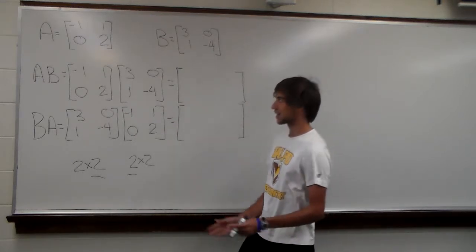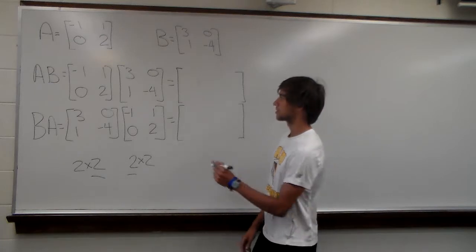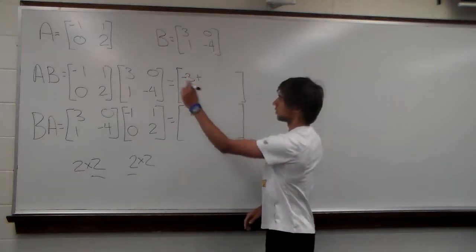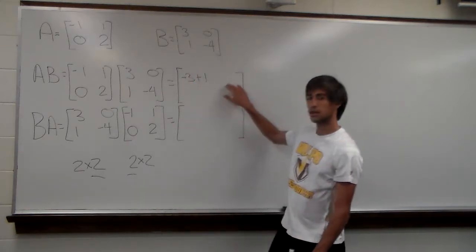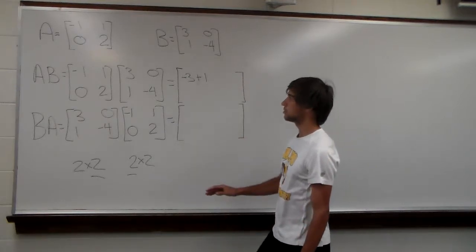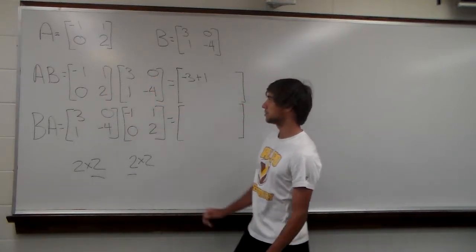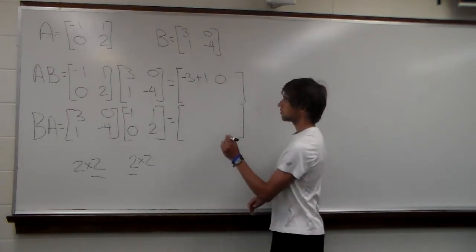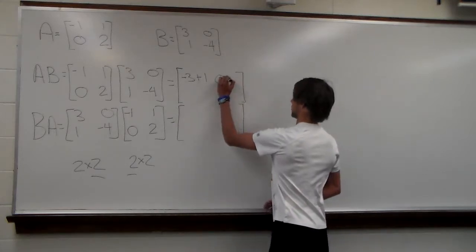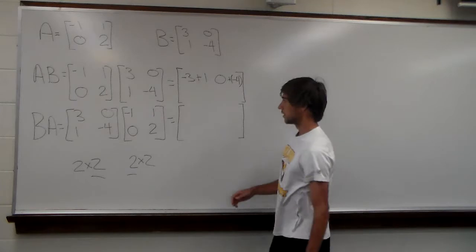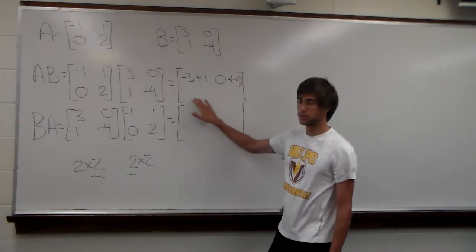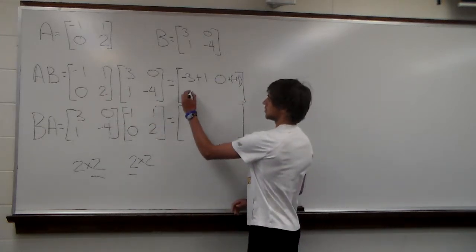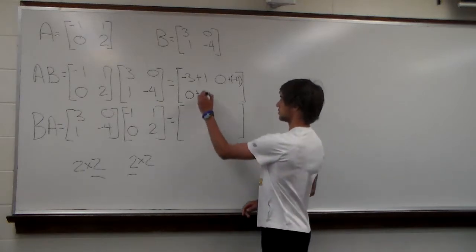For row 1, column 1: negative 1 times 3 is negative 3, plus 1 times 1 is 1. For row 1, column 2: negative 1 times 0 is 0, plus 1 times negative 4 is negative 4. For row 2, column 1: 0 times 3 is 0, plus 2 times 1 is 2.